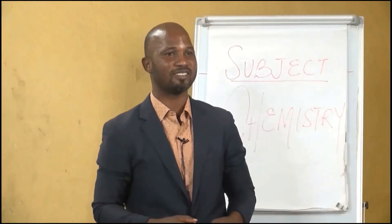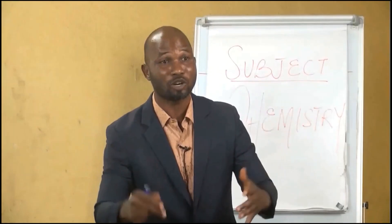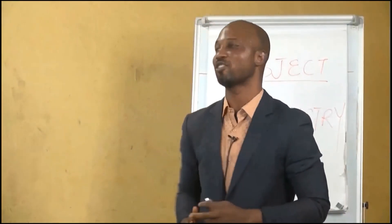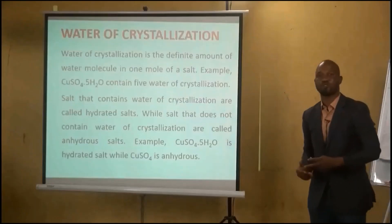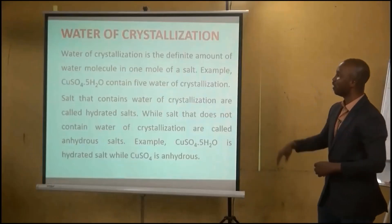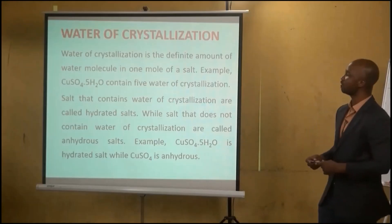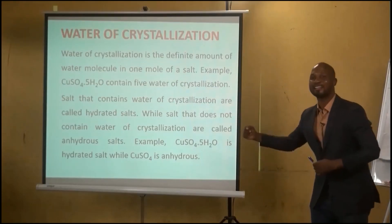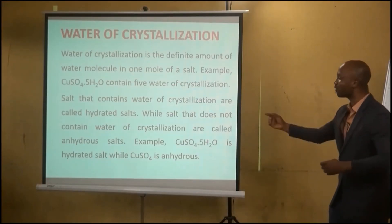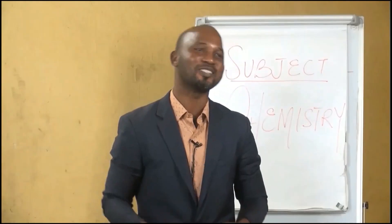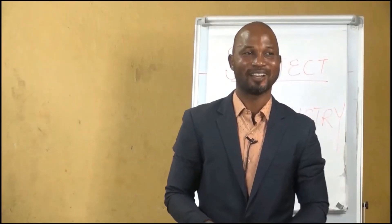Finally, water of crystallization is a definite or fixed amount of water molecules contained in one mole of a substance. For example, copper(II) tetraoxosulfate(VI) contains five molecules of water of crystallization, which is why it is called copper(II) tetraoxosulfate(VI) pentahydrate. Students should be able to differentiate between hydrated salt, which contains water of crystallization, and anhydrous salt, which does not contain water of crystallization.